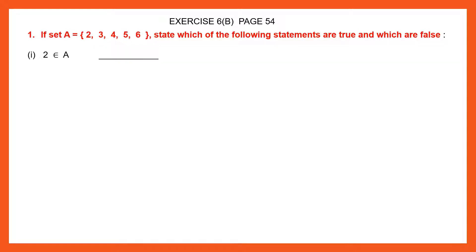First one: 2 ∈ A. This symbol stands for 'belongs to' or 'is a member of'. So I will read it as '2 belongs to set A' or '2 is a member of set A'. Now let's see whether 2 belongs to set A. Yes, we can see 2 there. So 2 is an element of set A, 2 belongs to set A. That statement is true.